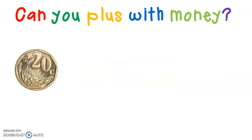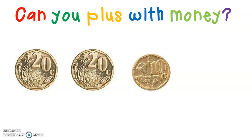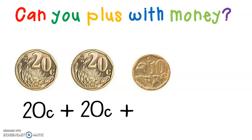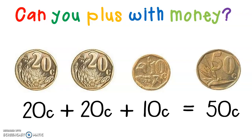Here is 20 cents and 20 cents and a 10 cent. If I add it together, which is plus, it is 20 cents plus 20 cents plus 10 cents equals 50 cents. And this is what my 50 cent will look like. So if I want to break up my 50 cents, I will get two 20 cents and a 10 cent.